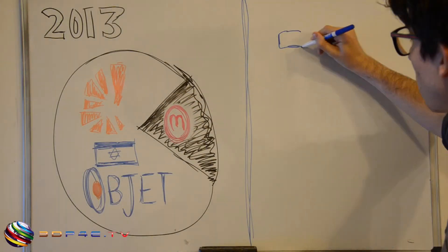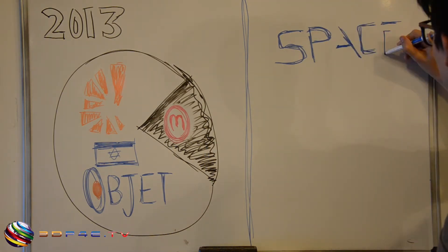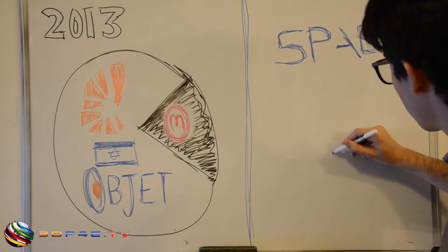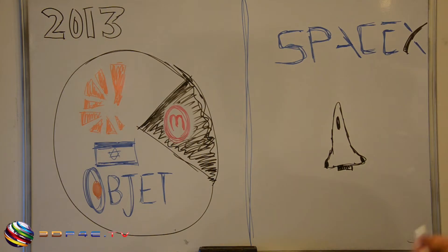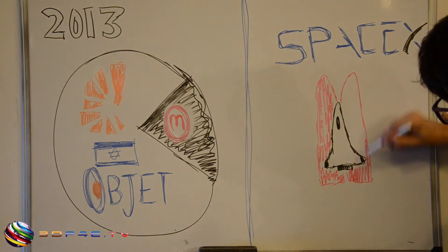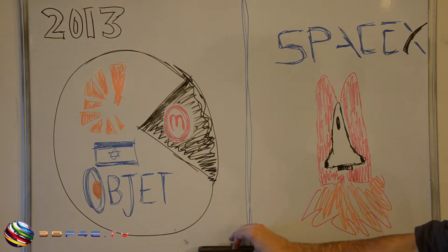Also in 2013, SpaceX, led by Elon Musk, announced they plan to send 3D printing into space with 3D printed parts on their rockets. As of today, tests of these parts have been incredibly successful.